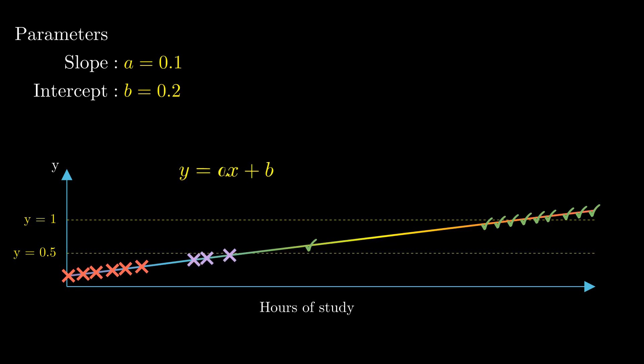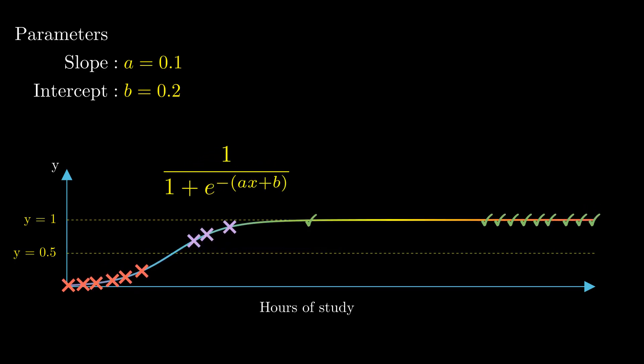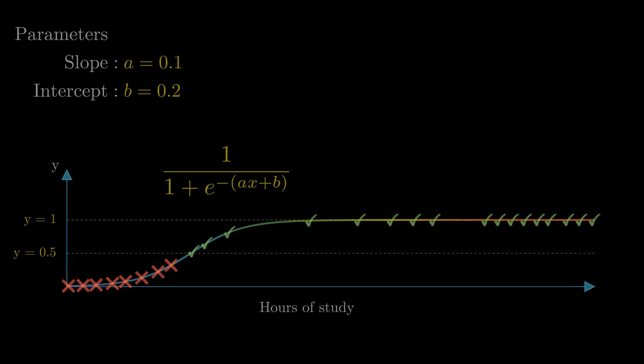But what if we were to bend the line so that it always stays between 0 and 1? Now, adding points on the right or left wouldn't be an issue because they would be close to the line and we would avoid misclassifying points. This deformed line is the logistic function that we saw earlier.